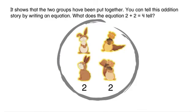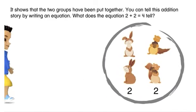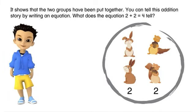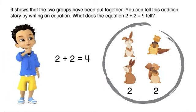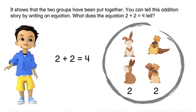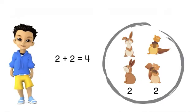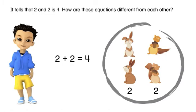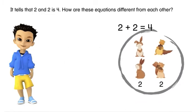It shows that the two groups have been put together. You can tell this addition story by writing an equation. What does the equation 2 + 2 = 4 tell? It tells that two and two is four.